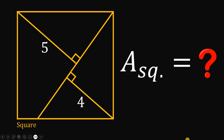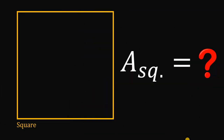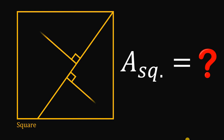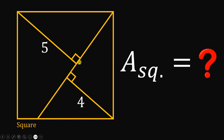Can you solve this viral geometry challenge? Here's the question. Given the square, let's draw some segments inside the square like this. The measure of this segment must be equal to 4 units and the measure of this segment must be equal to 5 units. The question is, what is the area of this square?